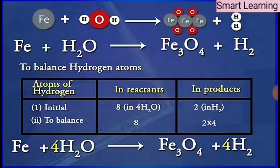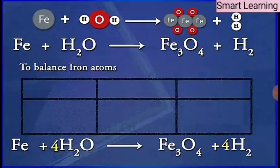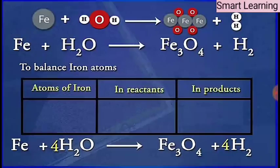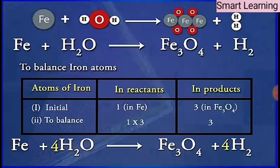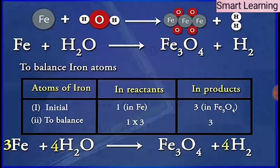Now, the one element that is left unbalanced is iron, that is Fe. There is 1 atom of iron in reactants but 3 atoms in products. To balance iron atoms, we put coefficient 3 before Fe, giving us: 3Fe + 4H2O → Fe3O4 + 4H2.